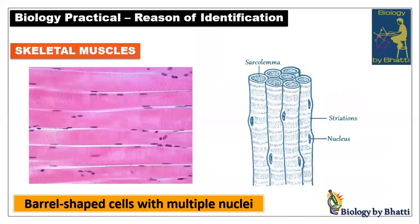Students, first of all, this slide is skeletal muscles. Skeletal muscles are barrel-shaped with multiple nuclei. The reason of identification is written below. The left side is a microscope view and the right side is a diagram which you can sketch. I have tried to outline it clearly so that you can easily be able to sketch.